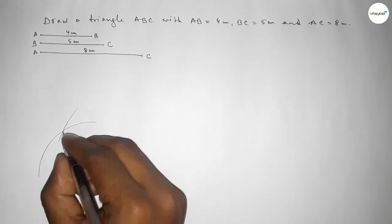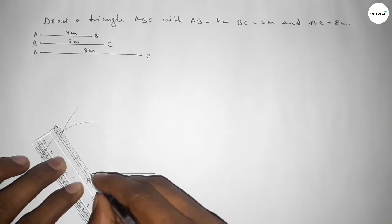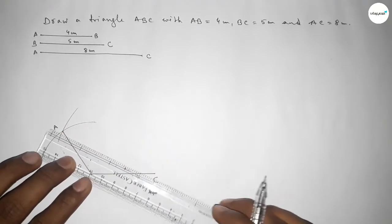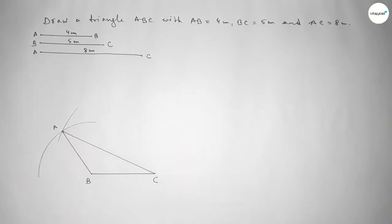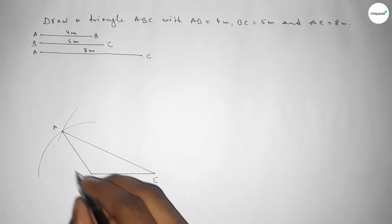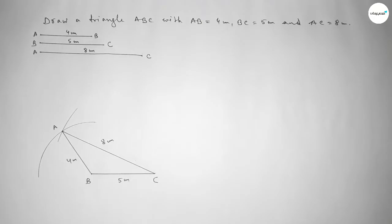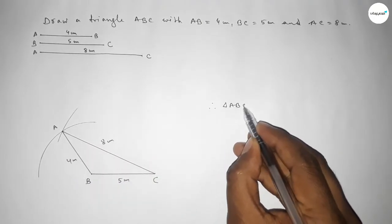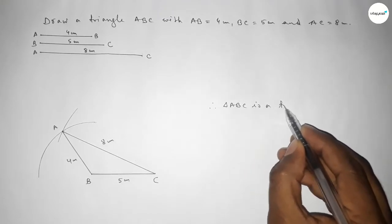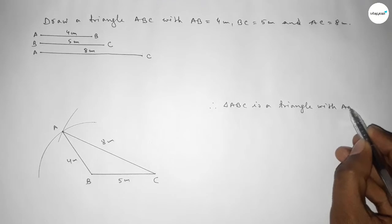Both arcs intersect at point A. We then join A to B and join A to C to get triangle ABC — with side BC = 5 cm, side AB = 4 cm, and side AC = 8 cm.